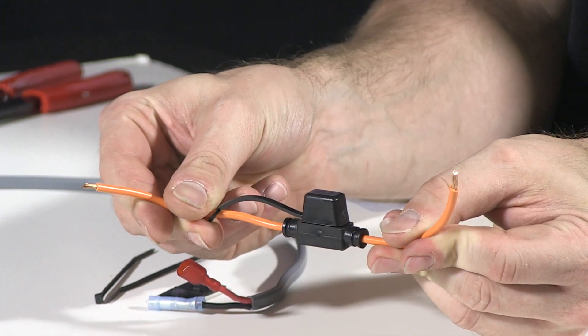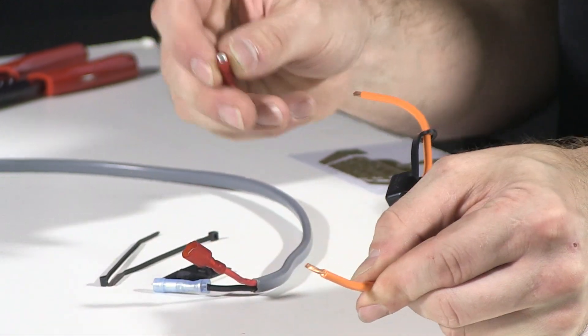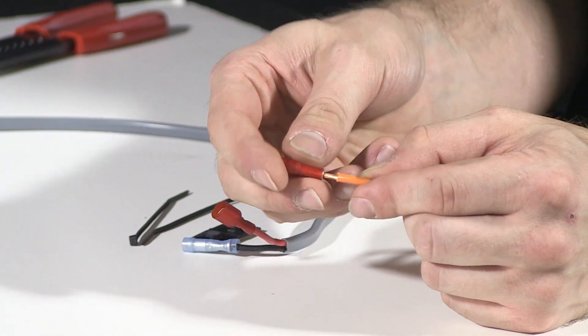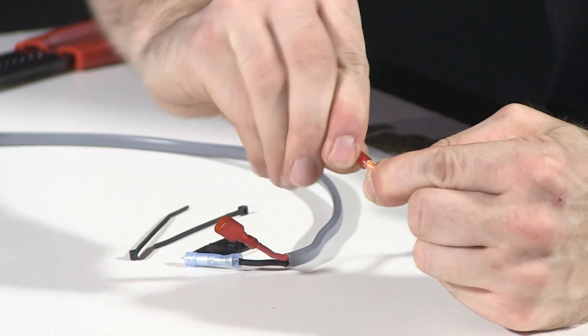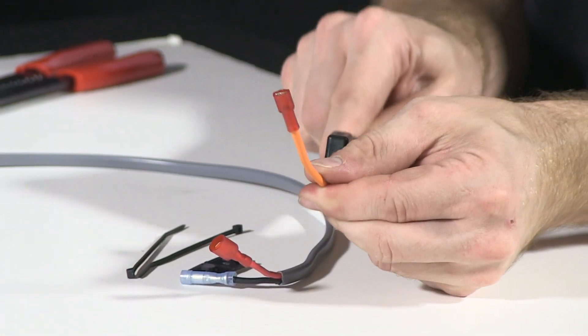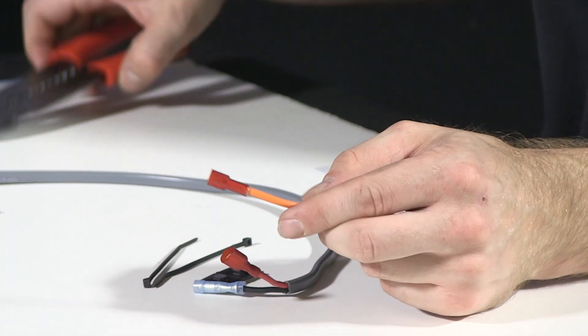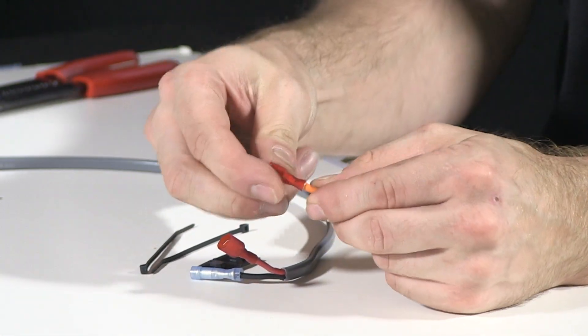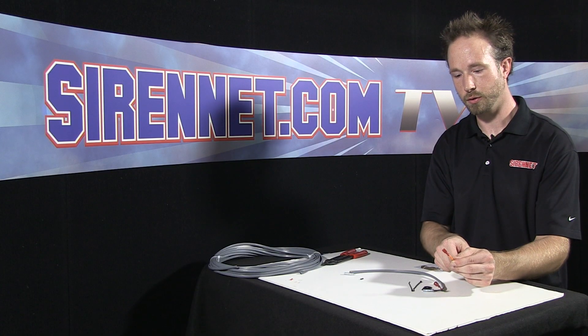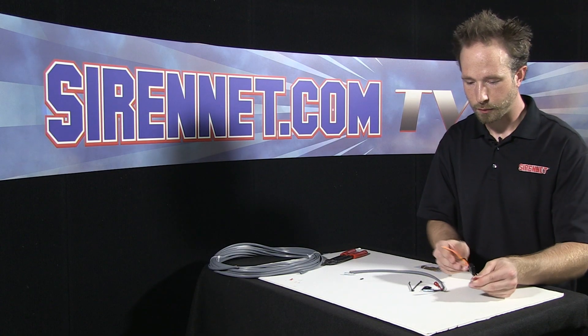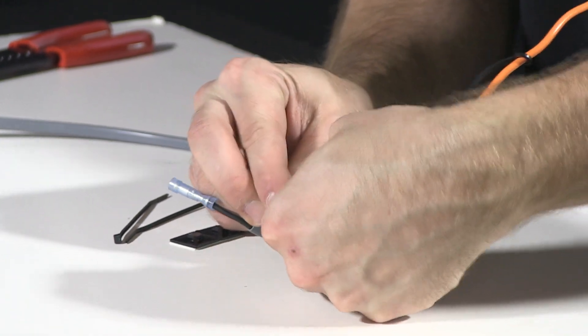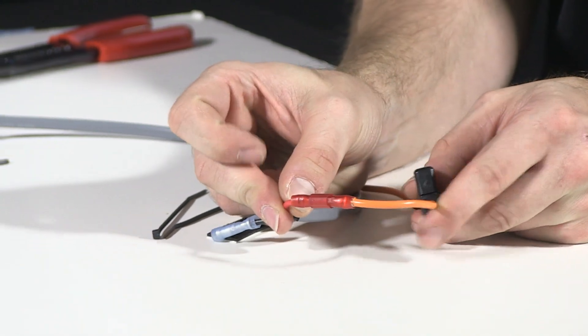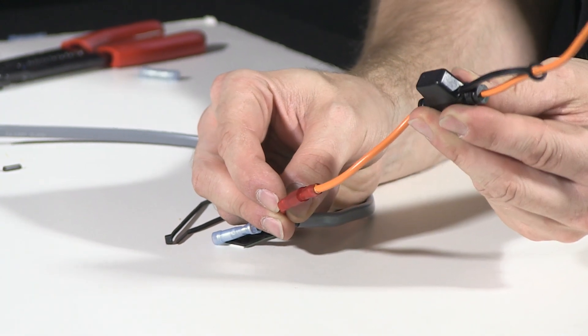What we're going to do here is take our inline fuse holder. On the end of the pigtail we're going to take the female end of the quick disconnect, slide it onto the end of the pigtail, give it a nice tight crimp, and give it a pull to make sure it's not going to come loose. I'll go ahead and slide those together.